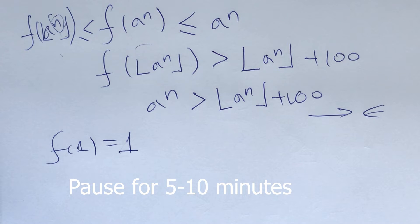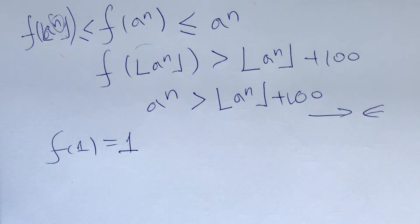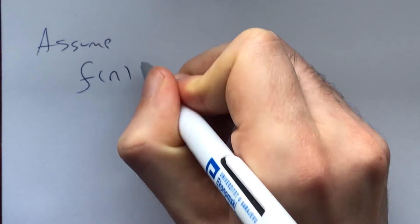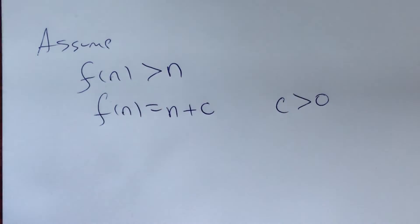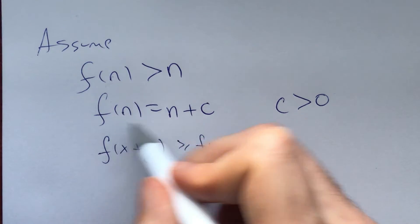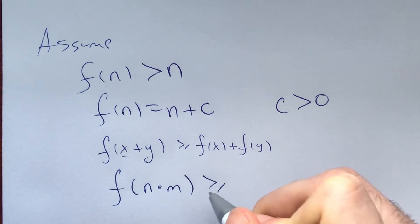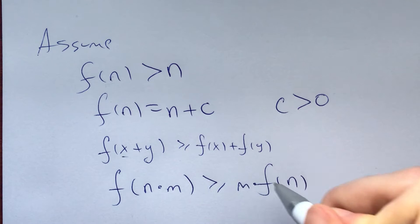I invite you to take five to ten minutes and try to prove that f(n) = n for all natural numbers n using similar tactics. In fact, at this point, try to finish the problem all by yourself. Here's the idea: assume for some n that f(n) > n, and let f(n) = n + c where c > 0. Applying the second inequality gives f(n·m) ≥ m·f(n) = m·n + m·c.